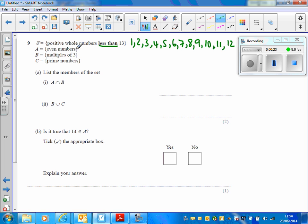Now the even numbers, but they must be included within the universal set. So the only even numbers there are 2, 4, 6, 8, 10, and 12.